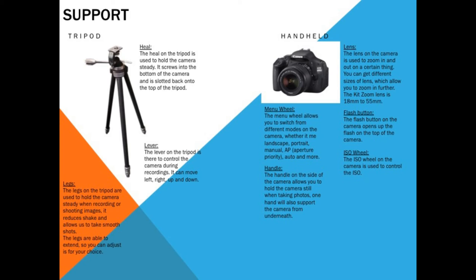We'll be looking at the support of the cameras. The first one will be a tripod. On the tripod we have a heel. The heel on the tripod is used to hold the camera steady — it screws into the bottom of the camera and is slotted back into the top of the tripod. The lever on the tripod is also there to control the camera, moving it up, down, left and right, and it keeps it steady.